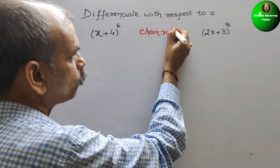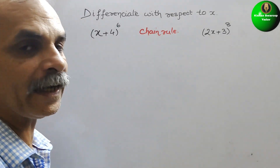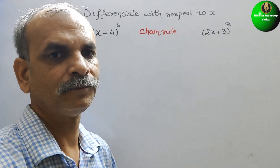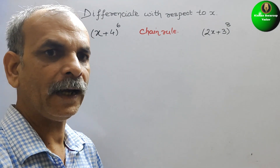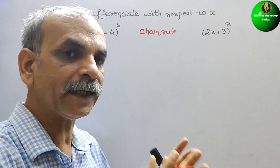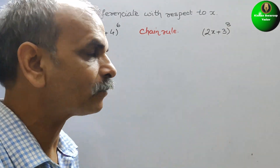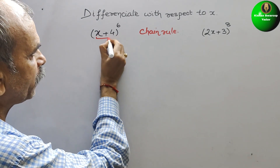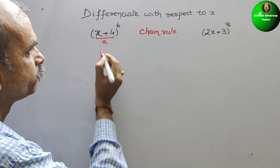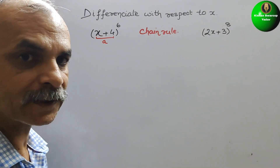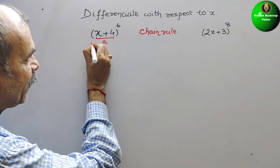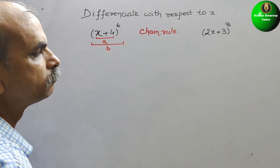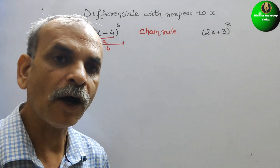In chain rule, whatever is in the bracket we will take it as one thing, and along with the power we will take it as another thing. That means, suppose x plus 4 is there — this we will take it as a. Next, along with the bracket and the power, we will take it as b. Now we will differentiate.